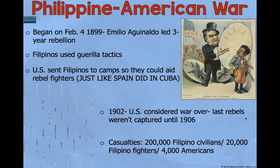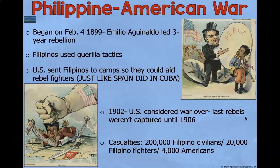Then we get into a Philippine-American War, which began on February 4th, 1899. Emilio Aguinaldo led a three-year rebellion. Filipinos used guerrilla-style tactics — blending into forests and hiding before attacking rather than fighting on a battlefield. The US then sent Filipinos to concentration camps, just like Spain did in Cuba. In 1902, the United States considered the war over; the last rebels weren't captured until 1906. There were 200,000 Filipino civilian casualties, 20,000 Filipino fighters killed, and only 4,000 Americans killed.